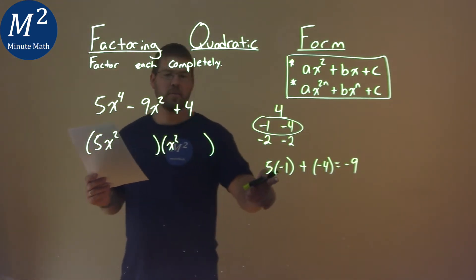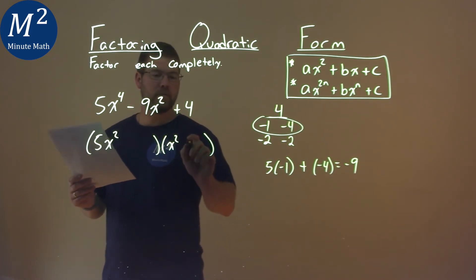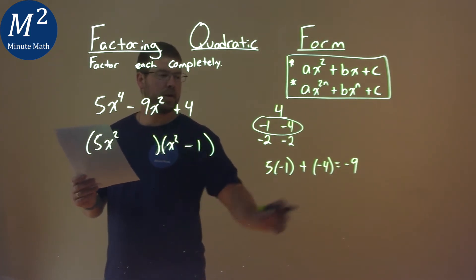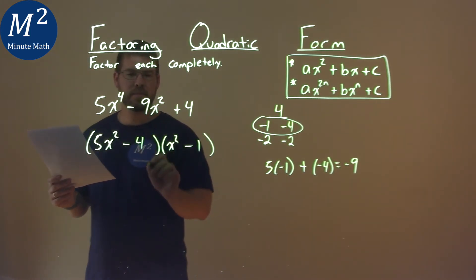So 5 has to be multiplied by the negative 1, so we put that over here, and the negative 4 goes over here.